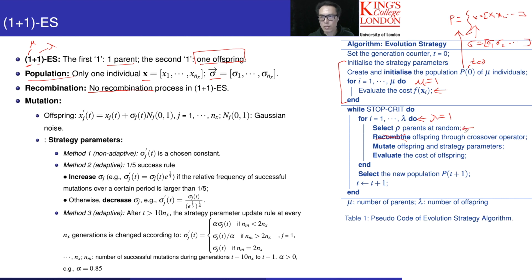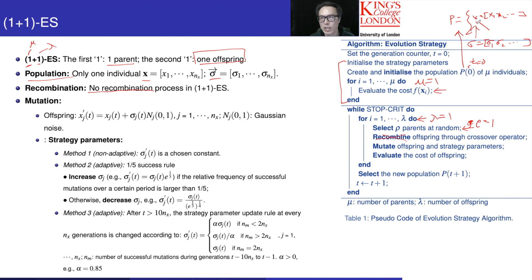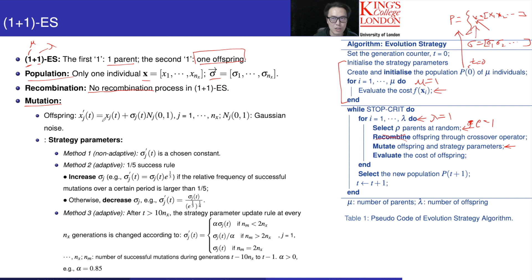When we get to the parent selection step, we do not need to select a parent because we only have one element, one individual in the population. So rho is 1 as well. That means each time we pick the only parent in the population, which is this single x. So each time, this x will serve as the parent, and then when we pick x and sigma, we are going to do mutation.